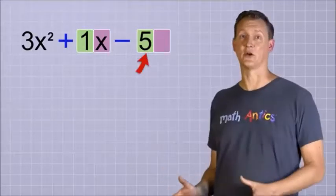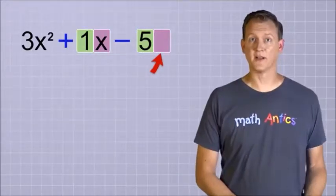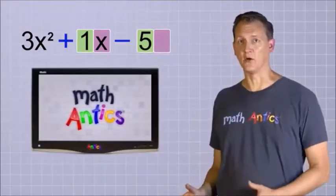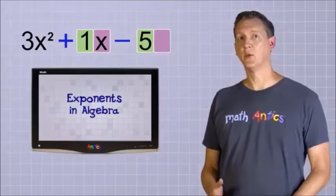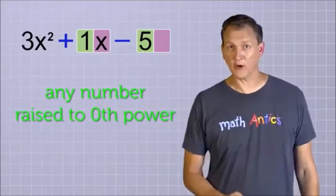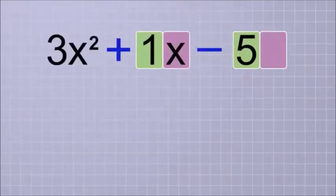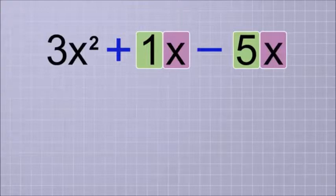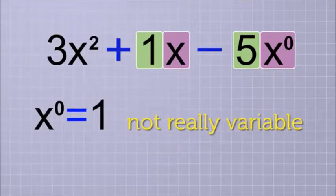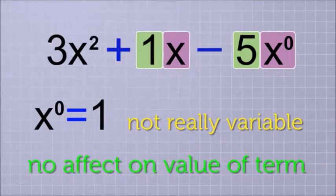Ok, but what about this last term that's missing its variable part? Well, that's a little trickier. Do you remember in our last video about exponents in algebra, we learned that any number or variable that's raised to the 0th power just equals 1? That means that we can think of this last term as having a variable, x, that's being raised to the 0th power. Since that would always just equal 1, it's not really a variable in the true sense of the word, and it has no effect on the value of the term.